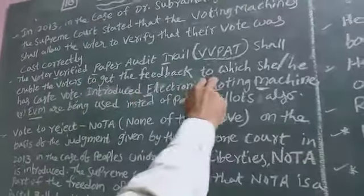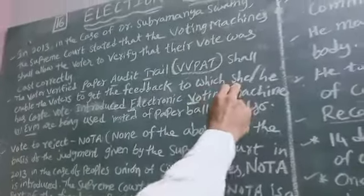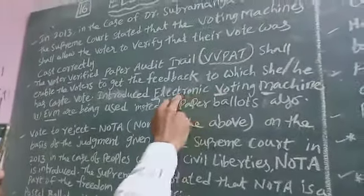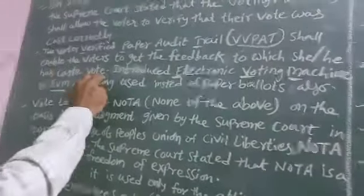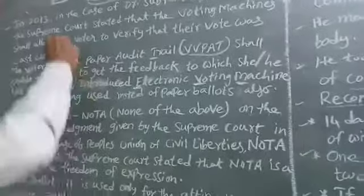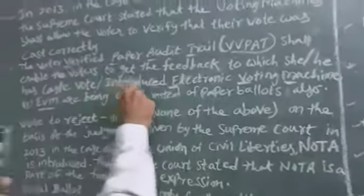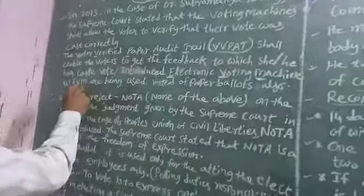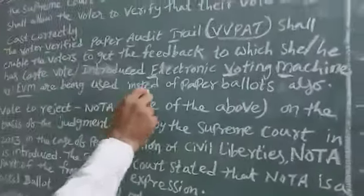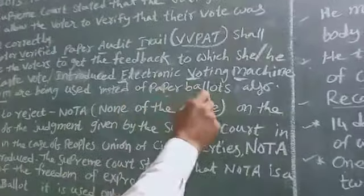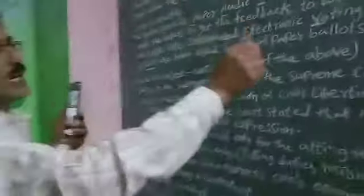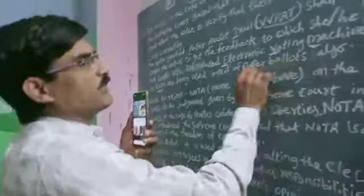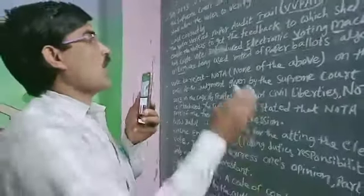Voters get feedback to verify which candidate they have voted for, introduced in elections through the Electronic Voting Machine. The Subramaniam Swami case also introduced this. Electronic Voting Machines or EVMs are being used instead of paper ballots.